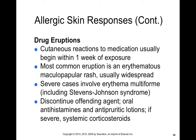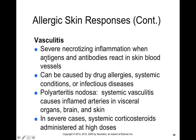Vasculitis is severe necrotizing inflammation when antigens and antibodies react with blood vessels — it can be caused by drug allergies or systemic conditions. It has subcategories like polyarteritis nodosa, which is essentially a systemic vasculitis due to inflamed arteries in visceral organs, brain, and skin. In severe cases, systemic corticosteroids can be used to limit the vasculitis and help keep blood vessels healthy.